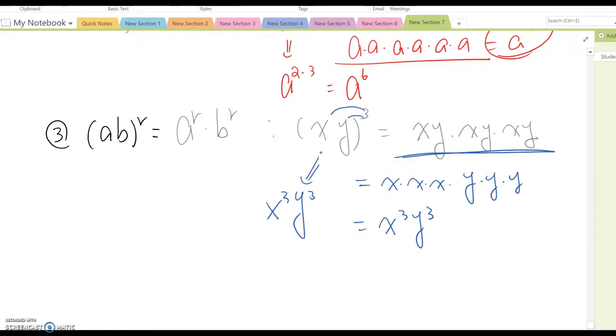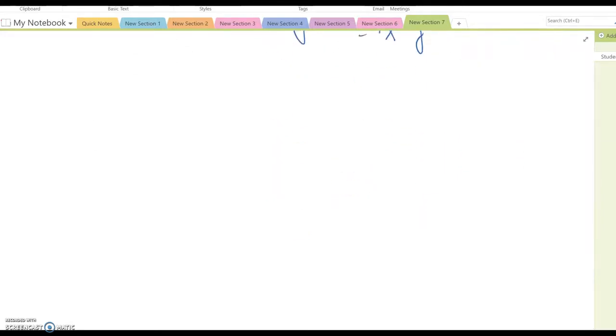Now, fourth property. A to the negative R. This is very important and popular property. And, you will utilize it very often while you are pursuing calculus courses. This will be 1 over A to the R power. In order to explain this one, I am going to make some kind of series.